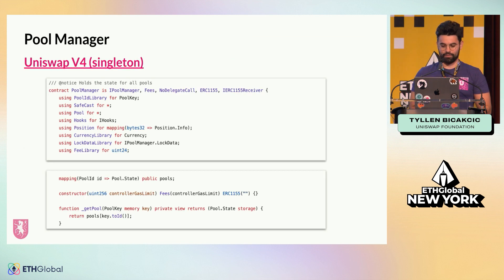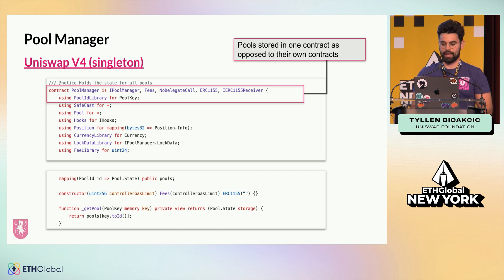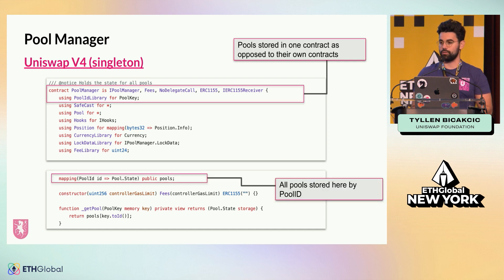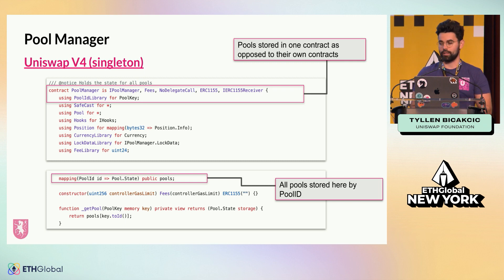What we did in v4 is introduce a singleton style design, which means all of the pools now live in one contract and each have their own ID. This ID is what you use to reference the pool in the contract. Right off the bat we're making it simpler and more gas efficient to spin up pools — now you don't have to deploy new contracts every time you spin up a pool. It all exists in the v4 pool manager.